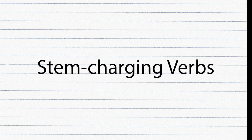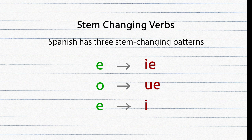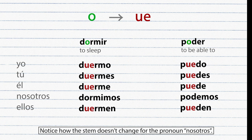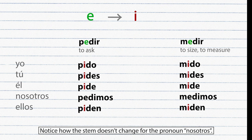Stem-changing verbs. Spanish has three stem-changing patterns. The stem undergoes a vowel change in the last or only syllable of the word, but the endings remain the same — that's why they are called stem-changing verbs. In the present tense there are three patterns. Notice how the stem does not change for the pronoun nosotros.